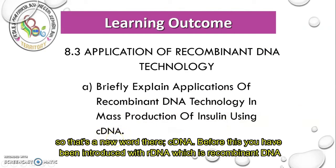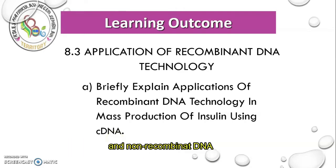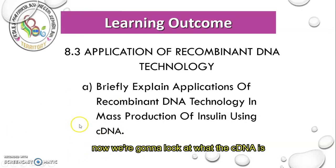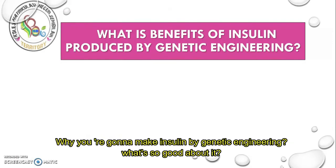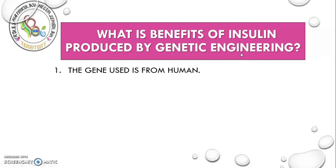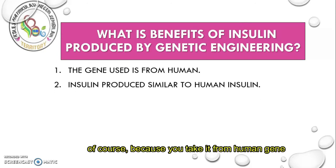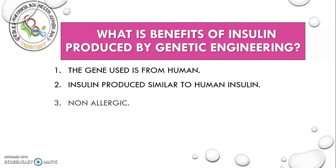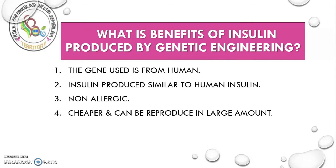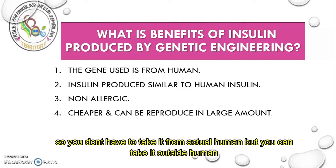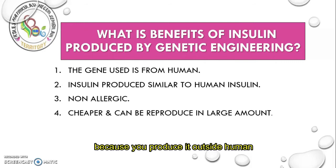You have been introduced to rDNA, which is recombinant DNA, and non-recombinant DNA. Now we're going to look at what cDNA is. Why make insulin by genetic engineering? What's so good about it is that the gene used is from a human — it is from our kind. The insulin produced will be similar to human insulin, it is non-allergic, cheaper, and can be reproduced in large amounts. So you don't have to extract it from actual humans; you can produce it outside the human body.